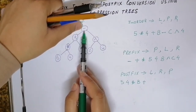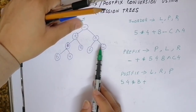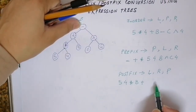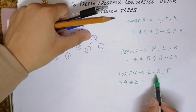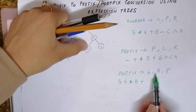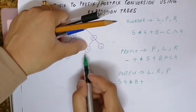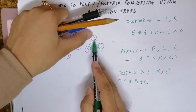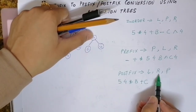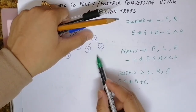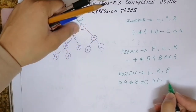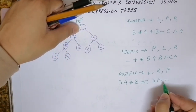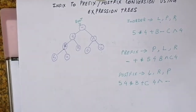Plus returns to minus. Minus then calls its right subtree which is power. Power calls its left subtree C — since C's left and right are both null it prints C and returns. Power then goes to its right subtree which is 4. Four's left and right subtrees are null so it prints 4. Then power is printed, and finally minus is printed as the last result.